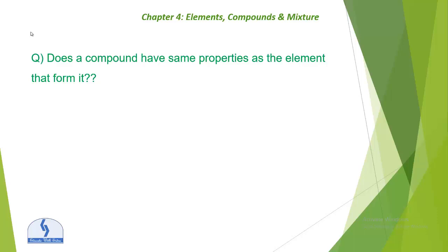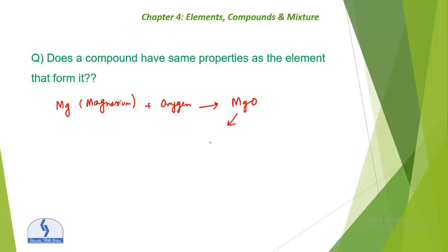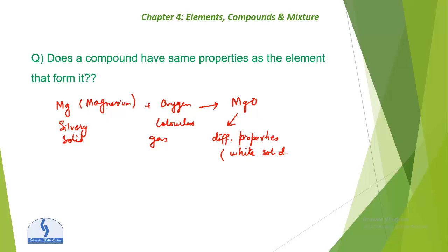The question is: does a compound have the same properties as the elements that form it? Take the example of magnesium burning in oxygen to form magnesium oxide MgO. Magnesium is a silvery solid and oxygen is a colorless gas, but magnesium oxide is a white solid — so the compound has different properties from its constituent elements.